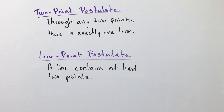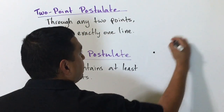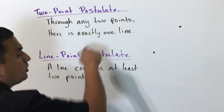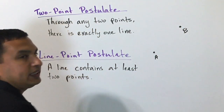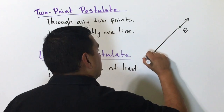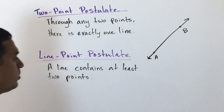The first one is the two-point postulate. It says through any two points, there's exactly one line. If I pick a point here and put a point there, there's only one way to connect those. There's only one line that's going to connect those two points. So if we call that one A and that one B, there's going to be just one line that connects those two points.